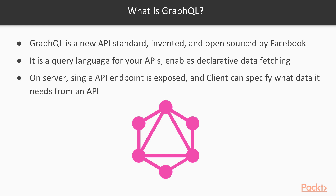GraphQL is being maintained by Facebook and the open source community on GitHub. GraphQL is a query language for your API which enables declarative data fetching. On the server, a single API endpoint is exposed which gives you all the information about what data it can provide, and the client can specify exactly what data it needs from an API.